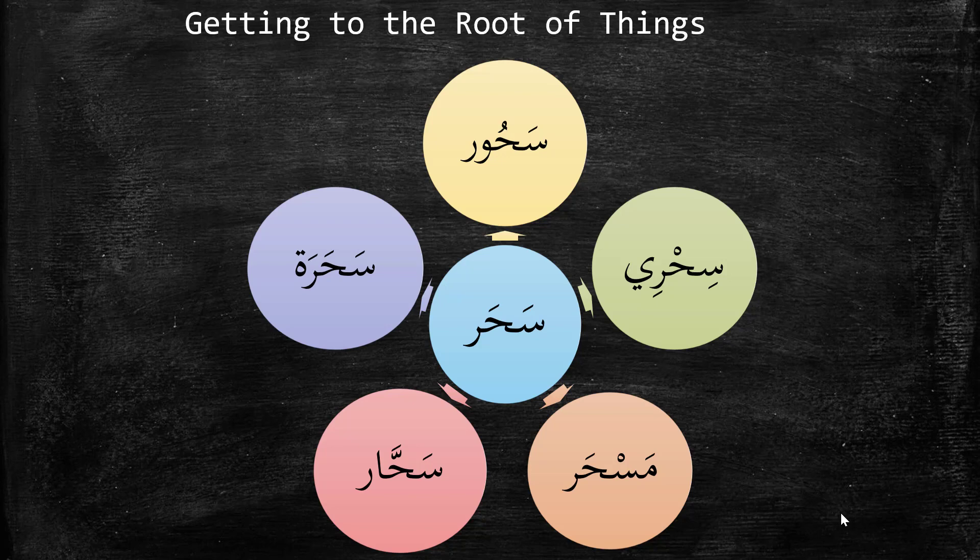The last word is 'Sahara.' We see the addition of a ta marbuta at the end. Sahara is actually the plural of Sahar — so Sahar is a sorcerer, and Sahara are sorcerers. From this slide we can see the addition of several letters that change the verb into the ism. That's another part of the concept of morphology — recognizing when changes happen to the verb.